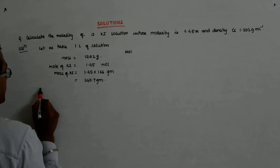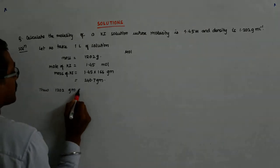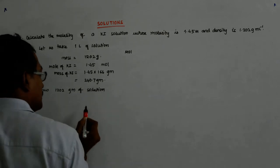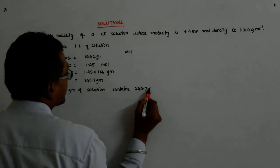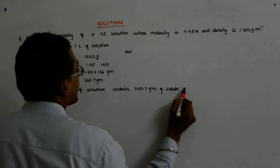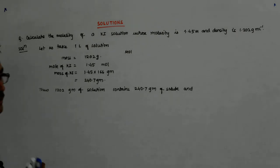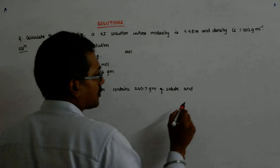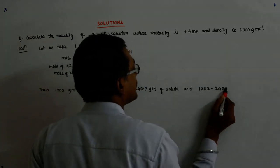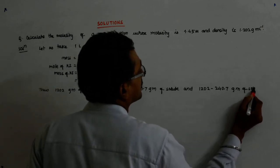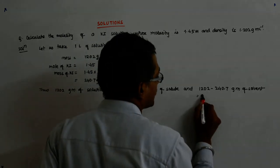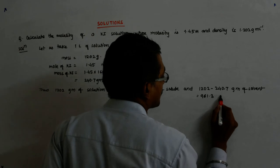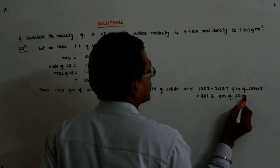Now, does 1202 grams of solution contain 240.7 grams of solute and how much of solvent? The total was 1202 grams. So, 1202 minus 240.7 grams of solvent. That gives you 961.3 grams of solvent.